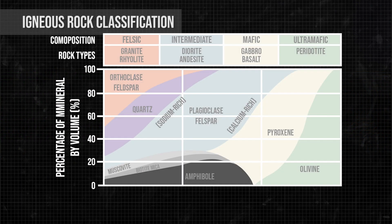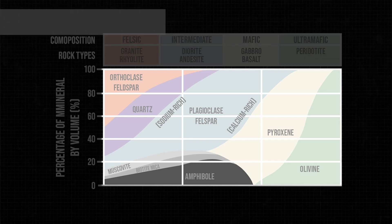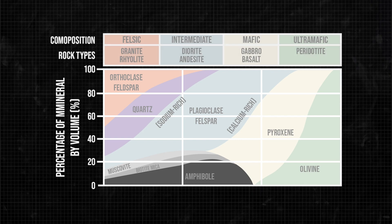For igneous rocks, we can classify them on the basis of the three or four minerals they contain, but that sort of systematic classification doesn't exist for metamorphic rocks.